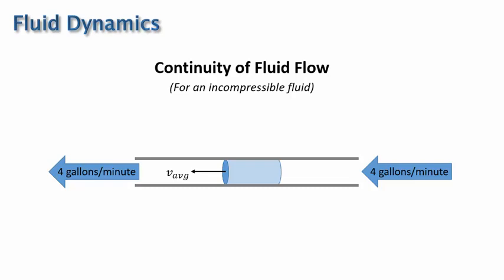Or if more water flows out of the pipe every minute than flows in, then where would the extra water be coming from? It would mean that the water is being created in the pipe somehow, which of course isn't happening. So another way to say this is that the flow rate into the pipe equals the flow rate out of the pipe.